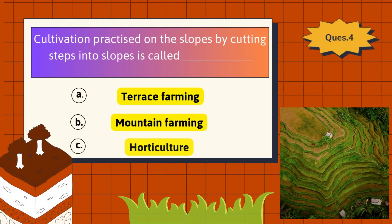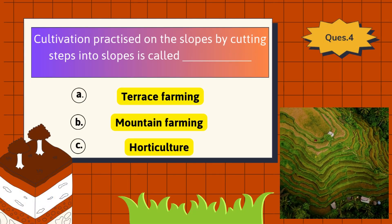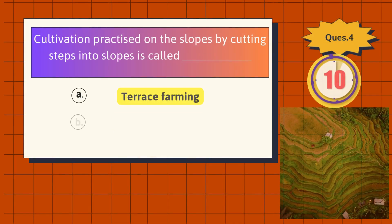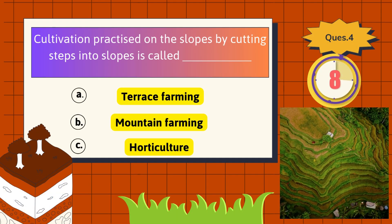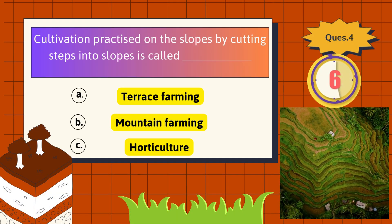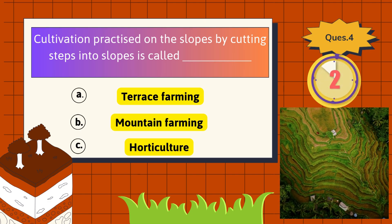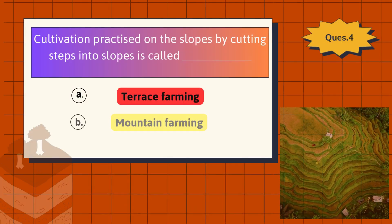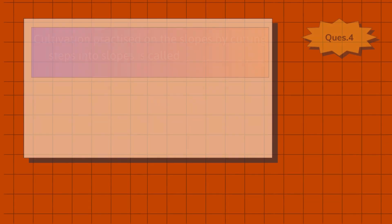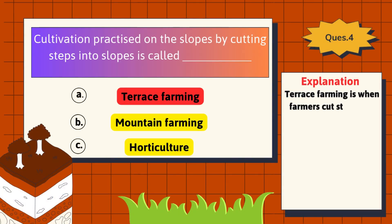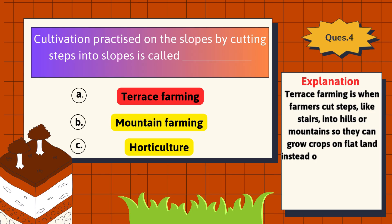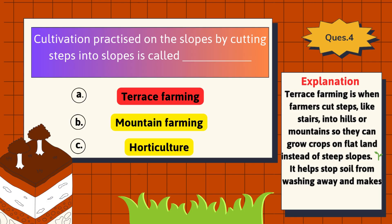Cultivation practiced on slopes by cutting steps into the slopes is called what? The correct answer is Terrace Farming. Terrace farming is when farmers cut steps, like stairs, into hills or mountains so they can grow crops on flat land instead of steep slopes. It helps stop soil from washing away and makes farming possible in hilly areas.